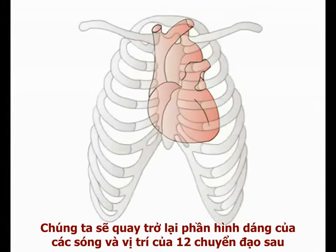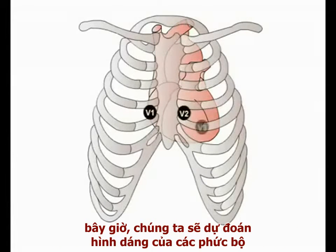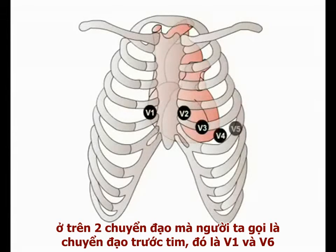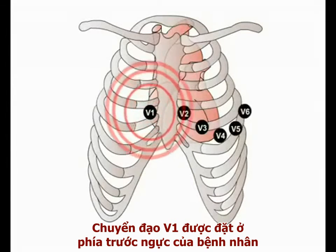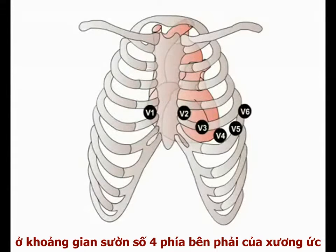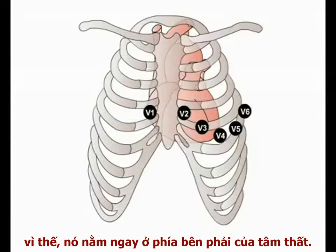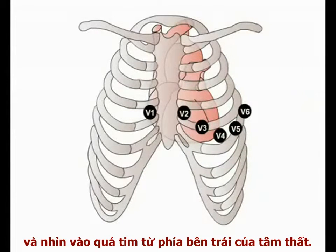We'll come back to the nomenclature and position of all 12 leads later, but for now let's see how this works in two of the six so-called chest leads: V1 and V6. Lead V1 is placed on the anterior surface of the patient's chest in the fourth right intercostal space to the right of the sternum, and therefore to the right of the bulk of the ventricles. In contrast, lead V6 is placed on the patient's chest in the fifth intercostal space mid-axillary line and looks at the heart from the left of the ventricles.